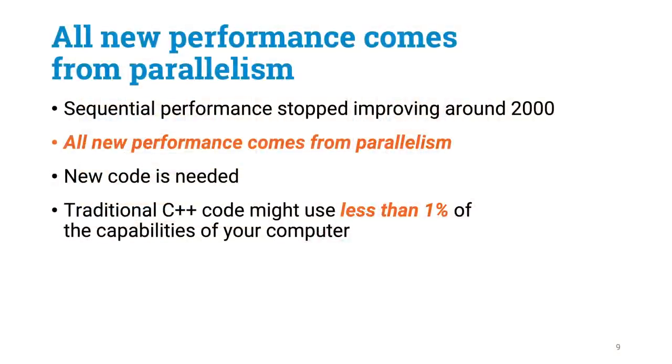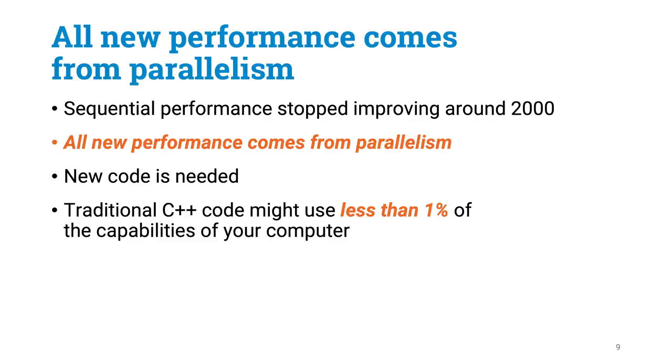Around the year 2000, something happened in the performance of modern computers. Basically, sequential performance stopped improving. All new performance is basically coming from parallelism. To benefit from this parallelism, new code is needed. Old code written for sequential computers might use only something like 1% of the performance of modern computers.